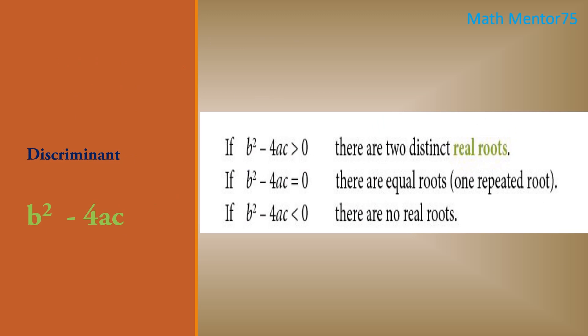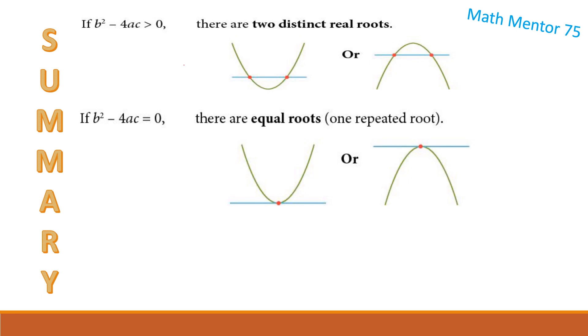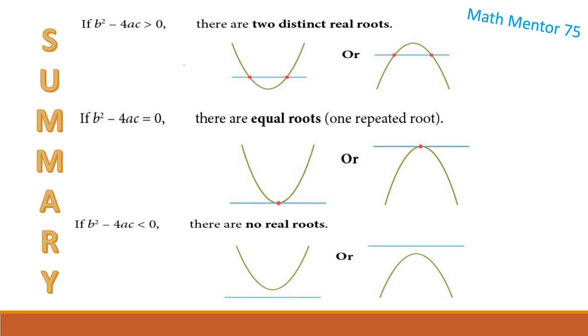So far we have learned: if the discriminant is greater than zero, this means two roots; if it is equal to zero, one root; if it is less than zero, this means we don't have any real roots. In summary: if the discriminant is greater than zero, whether the shape is U-shape or N-shape, it will intersect the x-axis at two points. If equal to zero, the x-axis intersects the curve at one point. If less than zero, the curve does not intersect the x-axis — in the case of a U-shape it is above the x-axis; in the case of an N-shape it is below the x-axis.